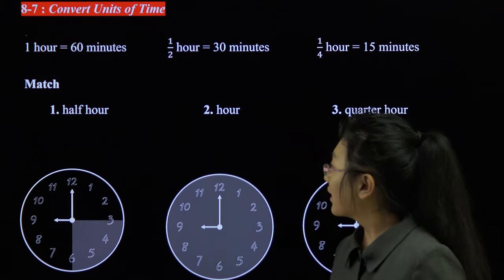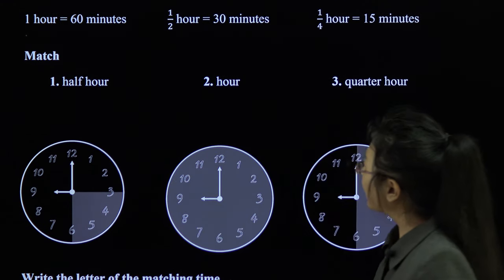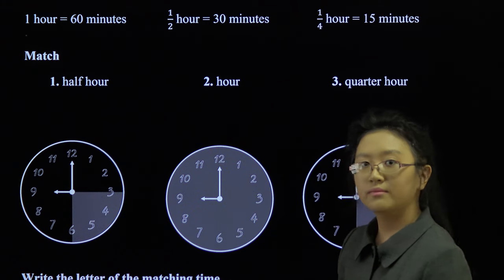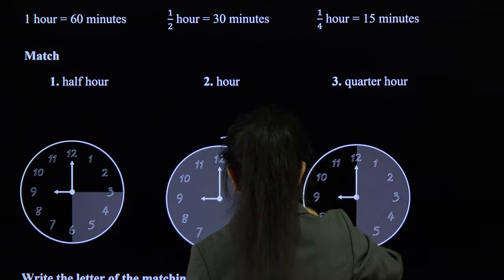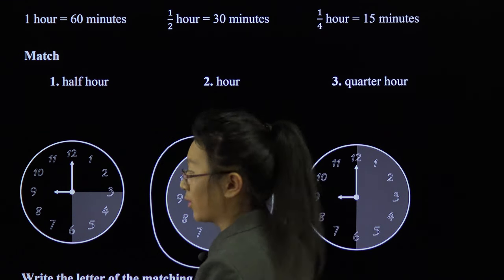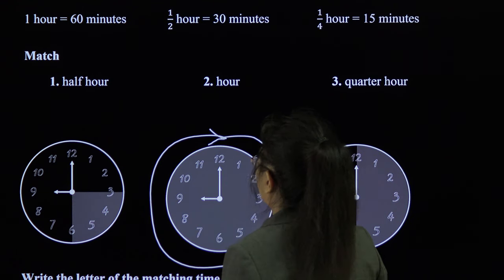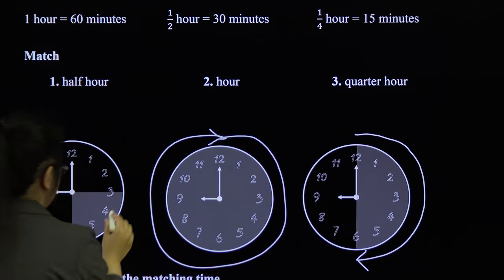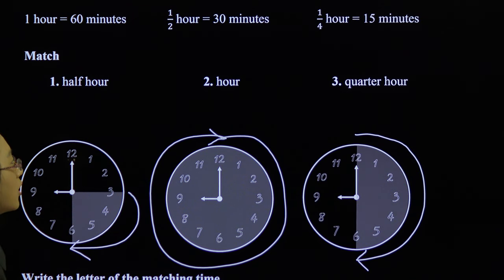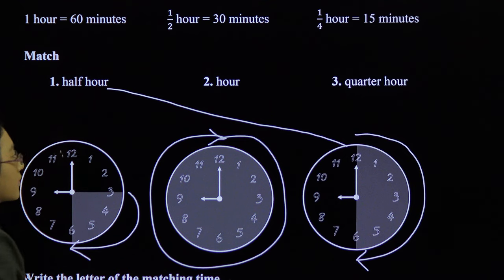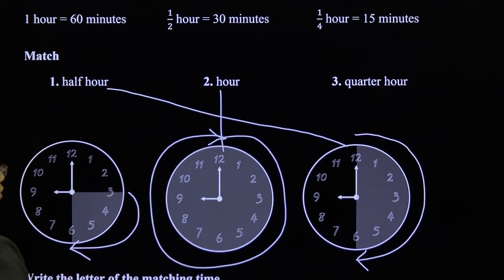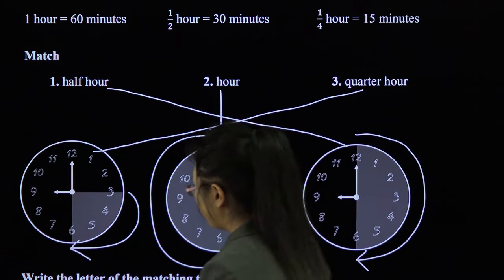We're going to do some matching. Now, half an hour. I'm sure that you've seen a clock. If the minute hand, which is, well, the longer hand, goes one full rotation around the clock, an hour has passed. So, if it goes half in rotation, half an hour has passed. If it goes a quarter of a rotation, a quarter of an hour has passed. Now, which one of these looks like half an hour? Which one of these looks like an hour? The one that's completely shaded. And which one of these looks like a quarter hour? The one with a quarter that is shaded.